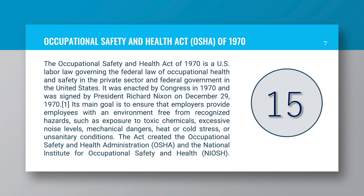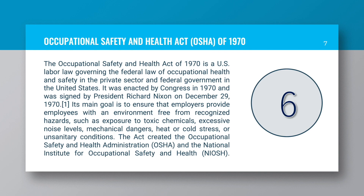The Occupational Safety and Health Act of 1970 is a US labor law governing the Federal law of Occupational Health and Safety in the private sector and Federal Government in the United States. It was enacted by Congress in 1970 and signed by President Richard Nixon on December 29, 1970. Its main goal is to ensure that employers provide employees with an environment free from recognised hazards, such as exposure to toxic chemicals, excessive noise levels, mechanical dangers, heat or cold stress, or unsanitary conditions. The Act created the Occupational Safety and Health Administration (OSHA) and the National Institute for Occupational Safety and Health (NIOSH).